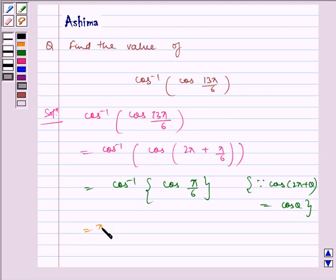Which is equal to π by 6, because π by 6 belongs to 0 comma π.